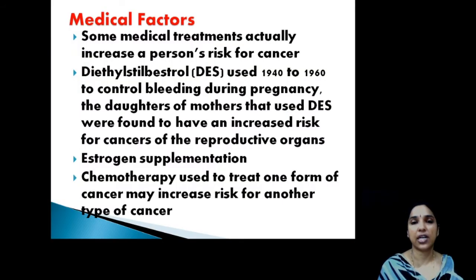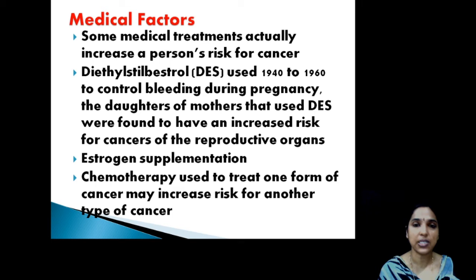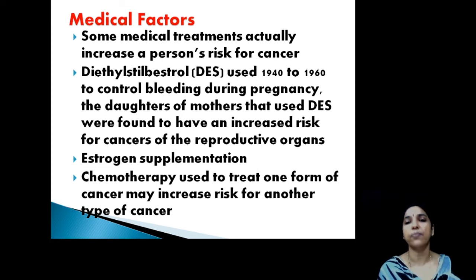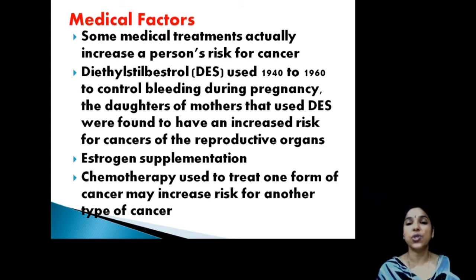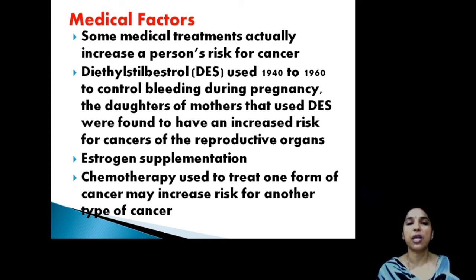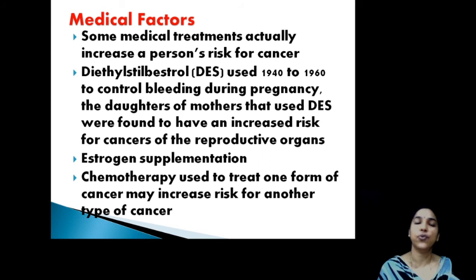Another important category is medical factors. These include exposure to radiations from scanning and MRI, and also treatments taken for other diseases. For example, diethylstilbestrol, commonly used from 1940 to 1971 to control bleeding during pregnancy, was found to increase cancer risk in the daughters of mothers who used it. Estrogen supplementation and chemotherapy may also lead to cancer in other parts of the body or affect the next generation through the fetus.